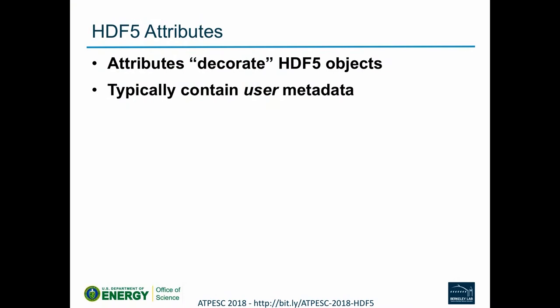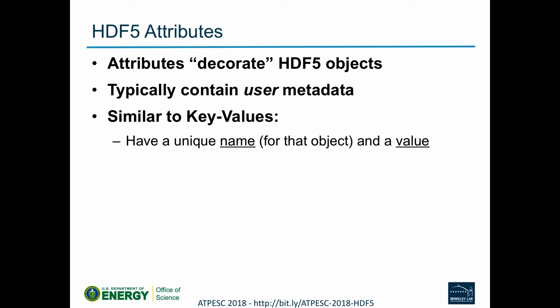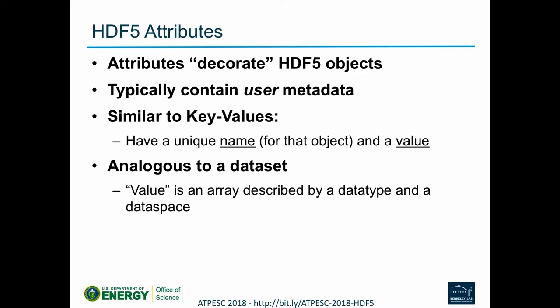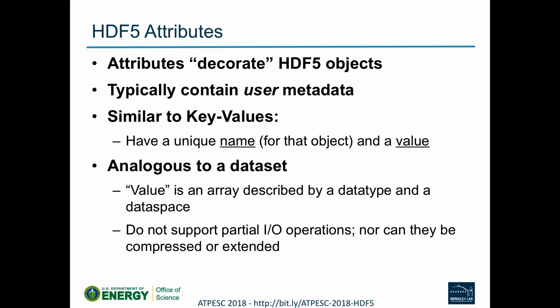HDF5 attributes are user metadata. You can record when you did a run, how many processes you used, the date, the machine, the compile configuration, startup parameters — all those kinds of things. They're very similar to key-value pairs. Each attribute has a unique name for that object and a simple value — an array just like datasets, but small. We don't support partial I/O on them; you can't compress or extend them. They're just a little block of data attached to an object in the file.